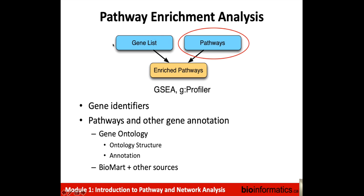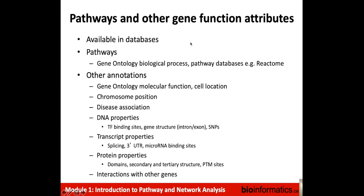So now coming back to pathway enrichment analysis and its requirements: we talked about gene lists; now we're going to talk about pathways. Pathways and other gene function attributes are used in pathway enrichment analysis. There are lots of information available in databases. A good source of pathway information is Gene Ontology biological process terms. Also pathway databases like Reactome, which we'll learn about in the workshop. There are many other types of annotations associated with genes — for instance, molecular function and cellular location, chromosome position, disease association, transcription factors that bind a set of genes, and many others.